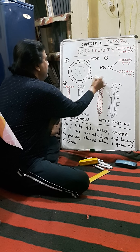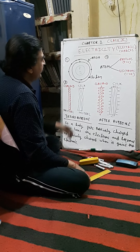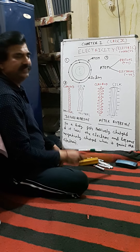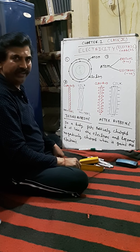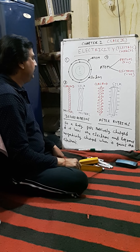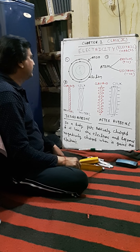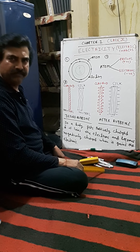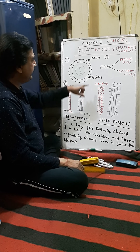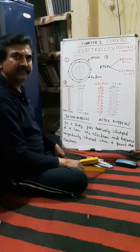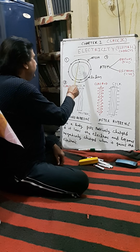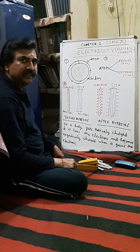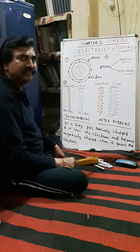Electrons are revolving in their respective orbits, but protons and neutrons are situated in the nucleus of the atom. The nucleus of the atom is positively charged and the electrons are negatively charged, revolving around the nucleus.